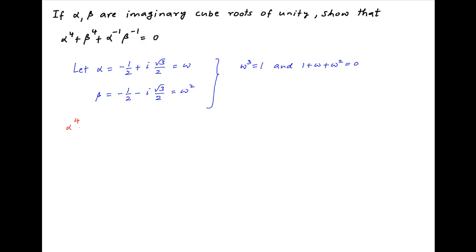Therefore, the given expression alpha raised to the power 4 plus beta raised to the power 4 plus alpha raised to the power minus 1 times beta raised to the power minus 1 equals omega raised to the power 4 plus omega raised to the power 8 plus 1 upon omega times omega square.